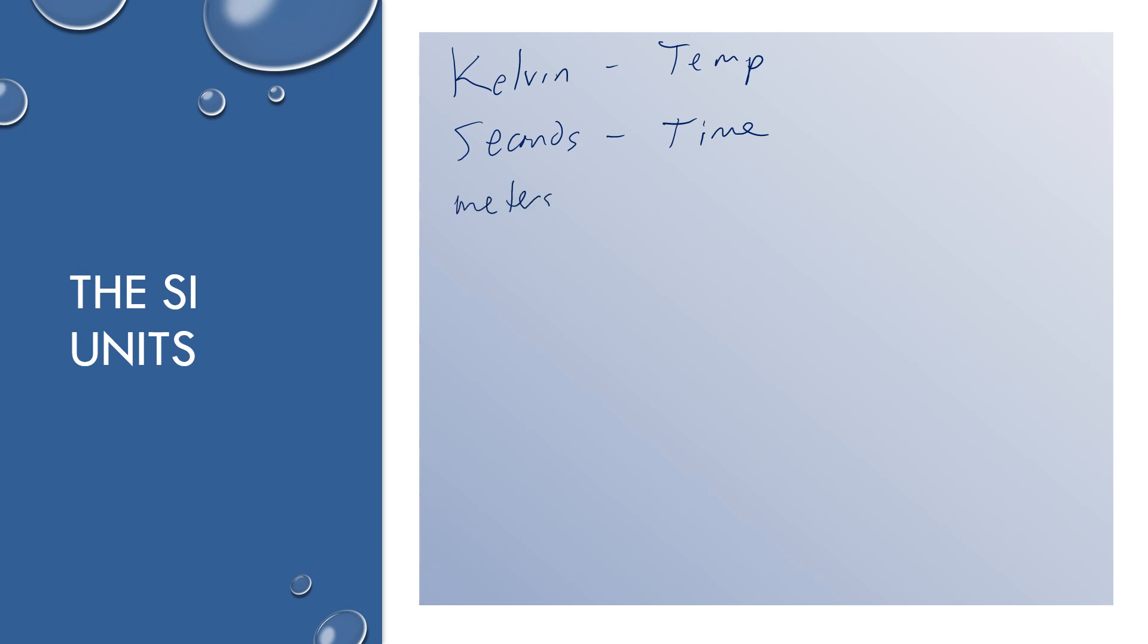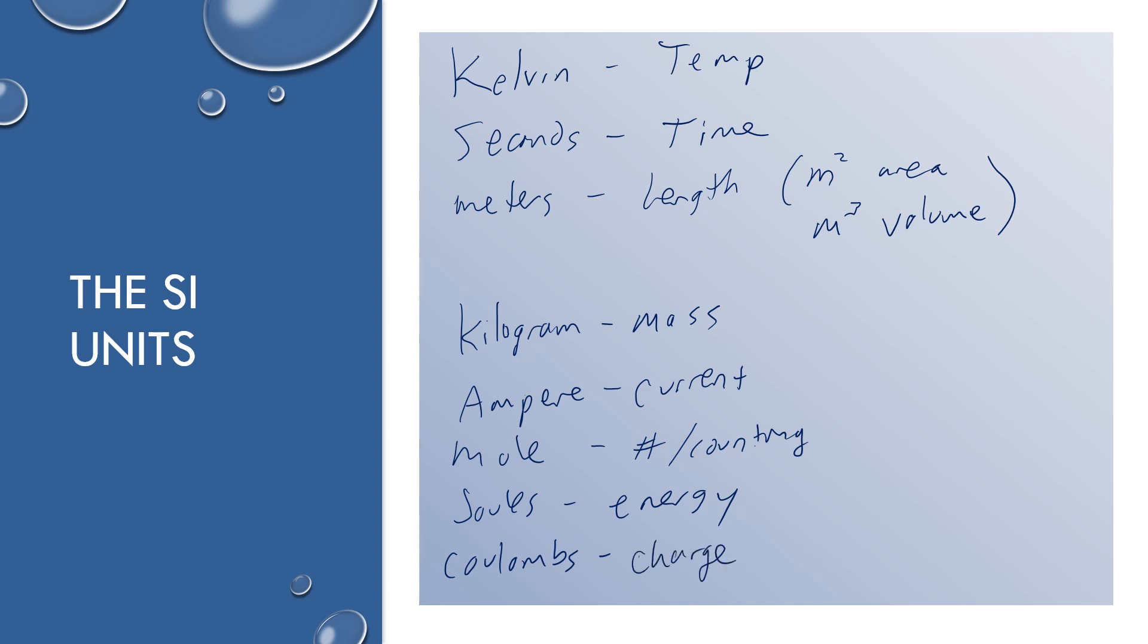The SI unit for time is seconds. We use meters for length. And as a result, we use square meters for area and cubic meters for volume. We use grams or kilograms. Kilograms is really the SI unit, but in chemistry, it makes more sense sometimes to just use grams because of the amount used. But that is the SI unit for mass. We'll use amps or the ampere, which is our unit for electric current. We use the mole, which is our unit for number of things or counting things, which is very important in chemistry. We'll use joules for energy as our SI unit. We use coulombs for the quantity of charge.